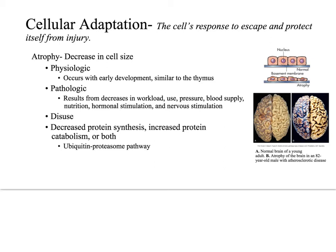Special proteins called heat shock proteins can respond to injuries by producing cell stress proteins to protect the cell from damage and help in its recovery. On a biochemical level, cells can respond to injury in a few other ways. Ubiquitin marks abnormal proteins for degradation, and this is produced by the heat shock proteins induced by stress.